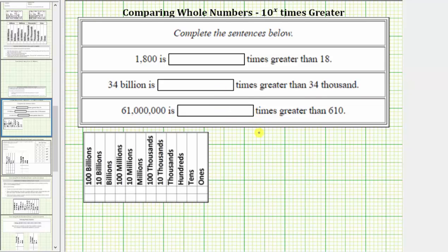Let's say we were given the number five and asked to determine a number that is ten times greater than five. To determine that number, we would multiply five by ten. Five times ten is equal to 50. This product indicates that 50 is ten times greater than five.